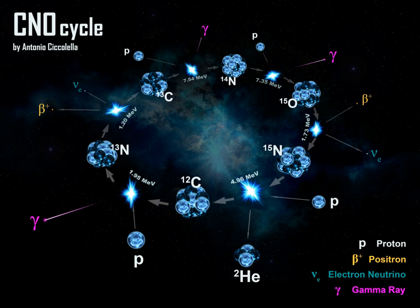The CNO cycle is one of the two known sets of fusion reactions by which stars convert hydrogen to helium, the other being the proton-proton chain reaction.